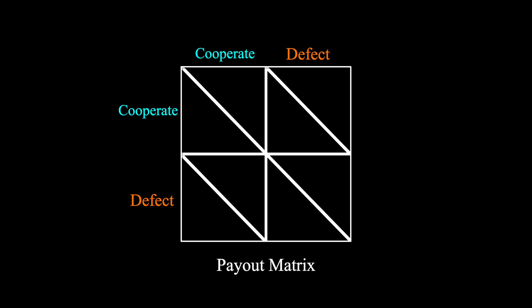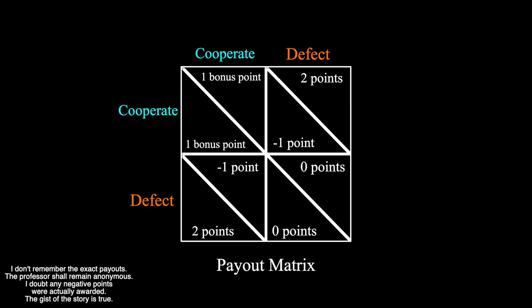We had the two usual choices: cooperate or defect. And the payout structure was something like this: if both players cooperated, each received a bonus point in the class. If you both defect, neither of you gets the bonus point. Finally, if one defects while the other cooperates, the defector gets two bonus points while the cooperator loses a point in the class.